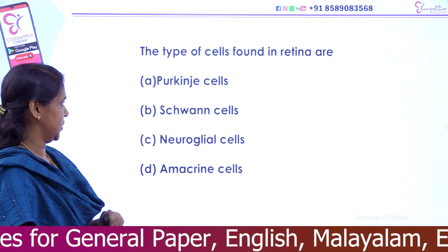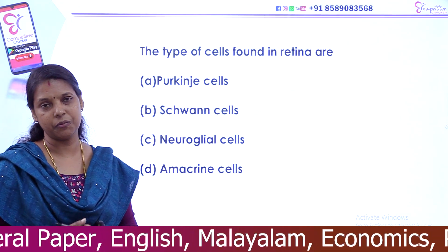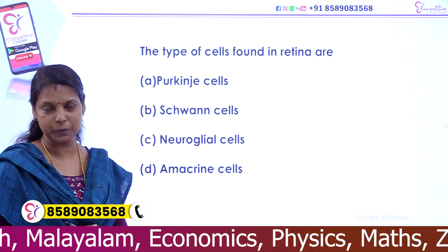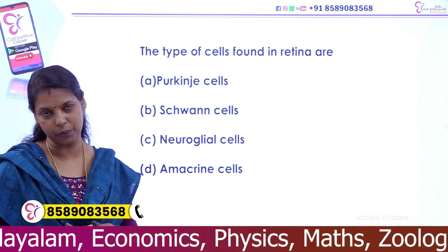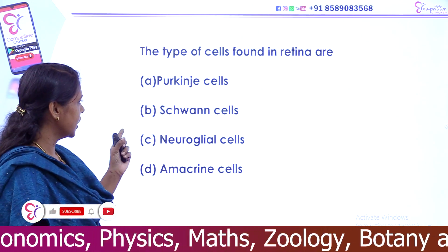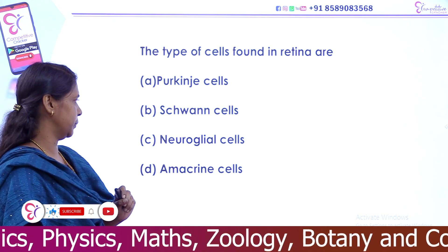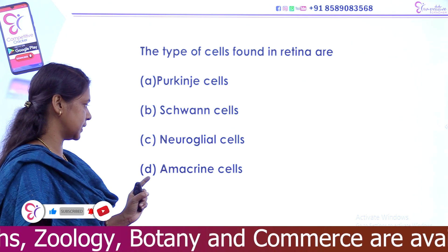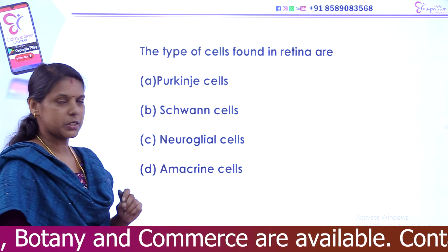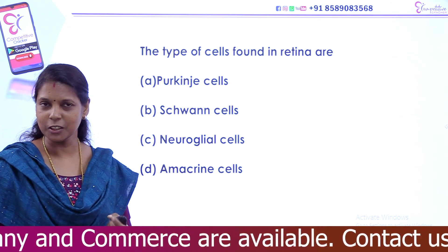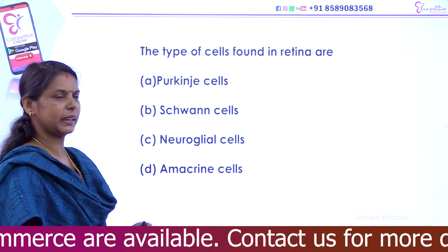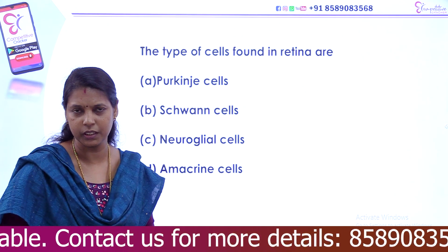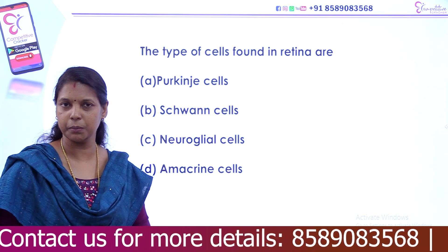First question: The type of cells found in the retina are — Purkinje Fibers, Schwann Cells, Neuroglia Cells, or Amacrine Cells? All options are there. What are Purkinje Cells? Purkinje Fibers.